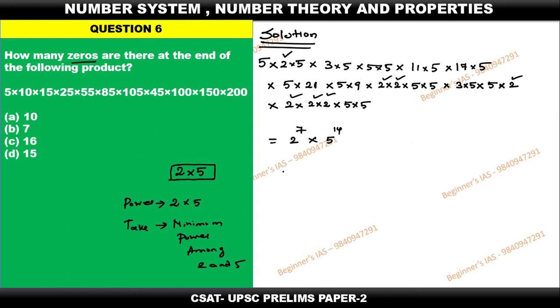What is the last tip to find out the number of zeros? Just take the minimum power among them. The minimum power is 7. Therefore, the number of zeros is going to be 7. Therefore, the answer for this question is option B: 7.